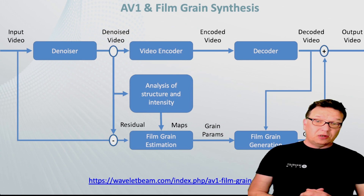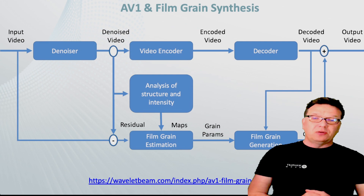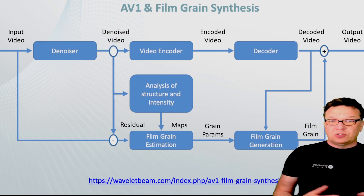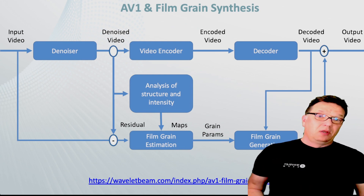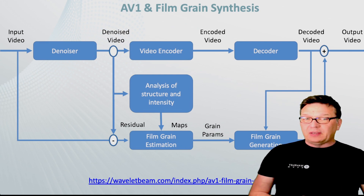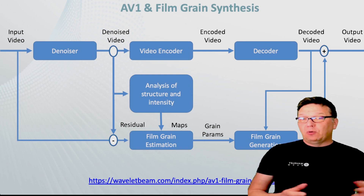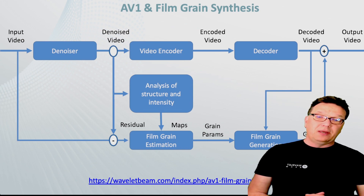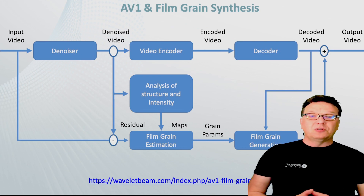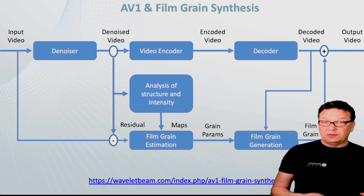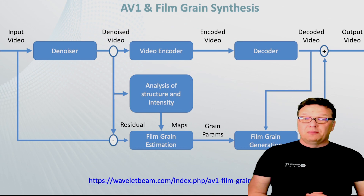After decoding at the set-top box or in the browser's decoder, the grain is generated based on these grain tables. The grain tables can change from one frame to the other, from one shot to the other, so every variation that appears at the input can be reflected with film grain synthesis. Wavelet Beam not only exchanges the video denoising with Iris, but also modifies and exchanges the film grain table generation — this is completely automatic in our case. The default AV1 denoiser and film grain table may be good enough for user-generated content, but definitely not for premium content.